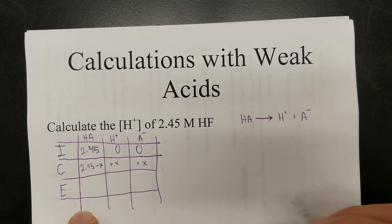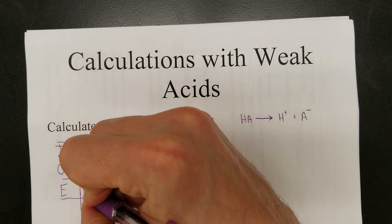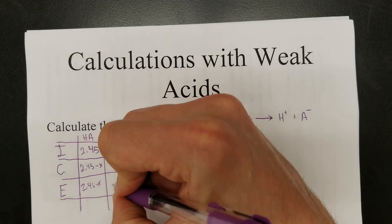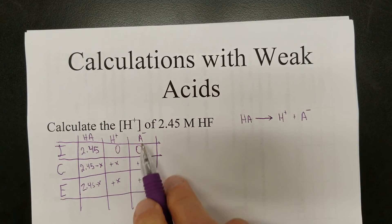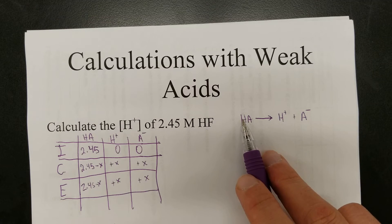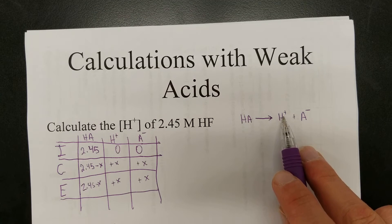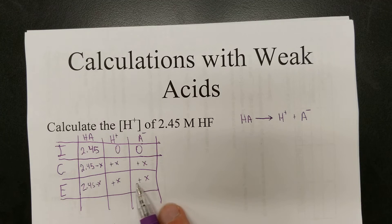Thus, at equilibrium, your final concentrations are going to be 2.45 minus X. Your hydrogen concentration is some unknown value of X, and whatever the concentration of anion is, it's the same. Look at this balanced equation. If it releases one hydrogen ion, then it's also going to release one anion, and so the concentration of anion and hydrogen ion will be the same.